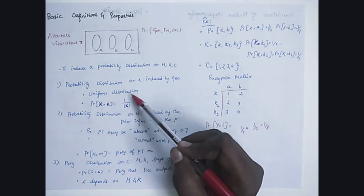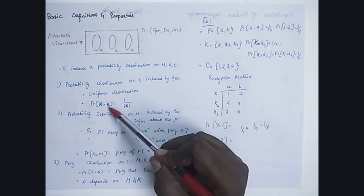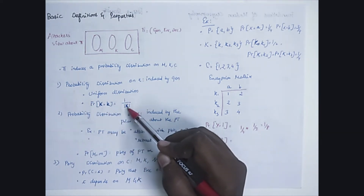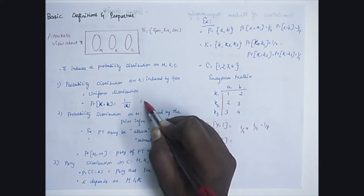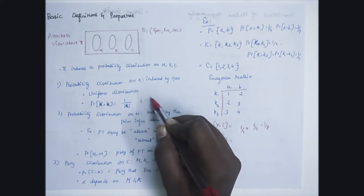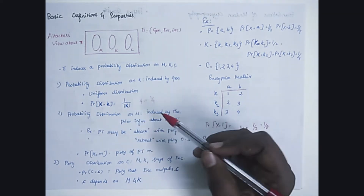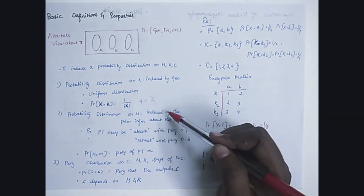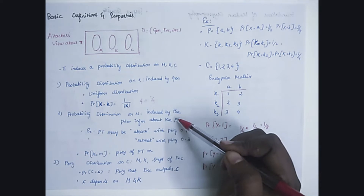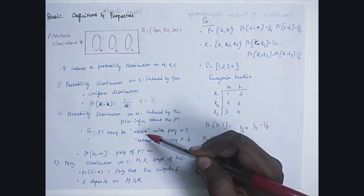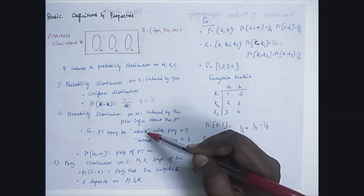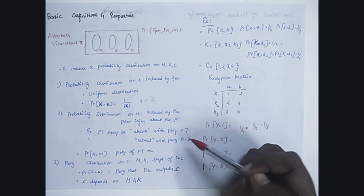It is generally a uniform distribution. So the probability of selecting the key value K is equal to 1 divided by the number of key values in the set K. That is, if you have 4 key values in the set K, then selecting any one key value from the set has the probability value of 1 divided by 4. The probability distribution on message M is induced by the prior information about the plain text. So if you have the plain text 'desert attack' or 'retreat', the attacker may get knowledge about the probability of selecting the plain text as 0.7 or 0.3.